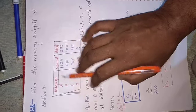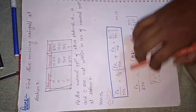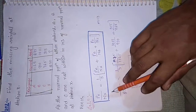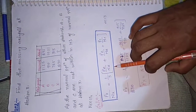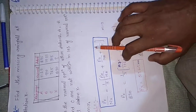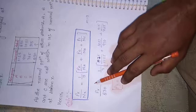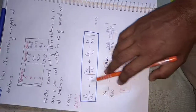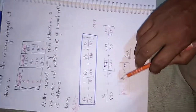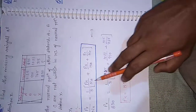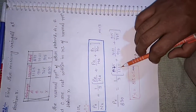यहाँ next question देखें — find the missing value of rainfall station। यह rain gauge का same question है। हमारा formula है: Px/Nx = 1/3 × (Pa/Na + Pb/Nb + Pc/Nc), क्योंकि m = 3 है।